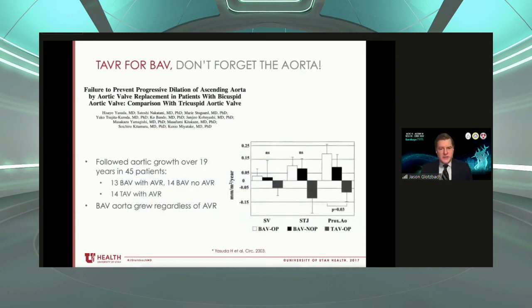As an aortic surgeon, I want to focus on the aorta. These data show that even after valve replacement, the aorta in bicuspid patients has an increased risk of dilation over time. So even after successful valve replacement with either surgery or TAVR, the ascending aorta and aortic root need to be continually monitored over the next years to decades, because these patients still have risk of developing aortopathy and an aneurysm even after effective valve replacement.